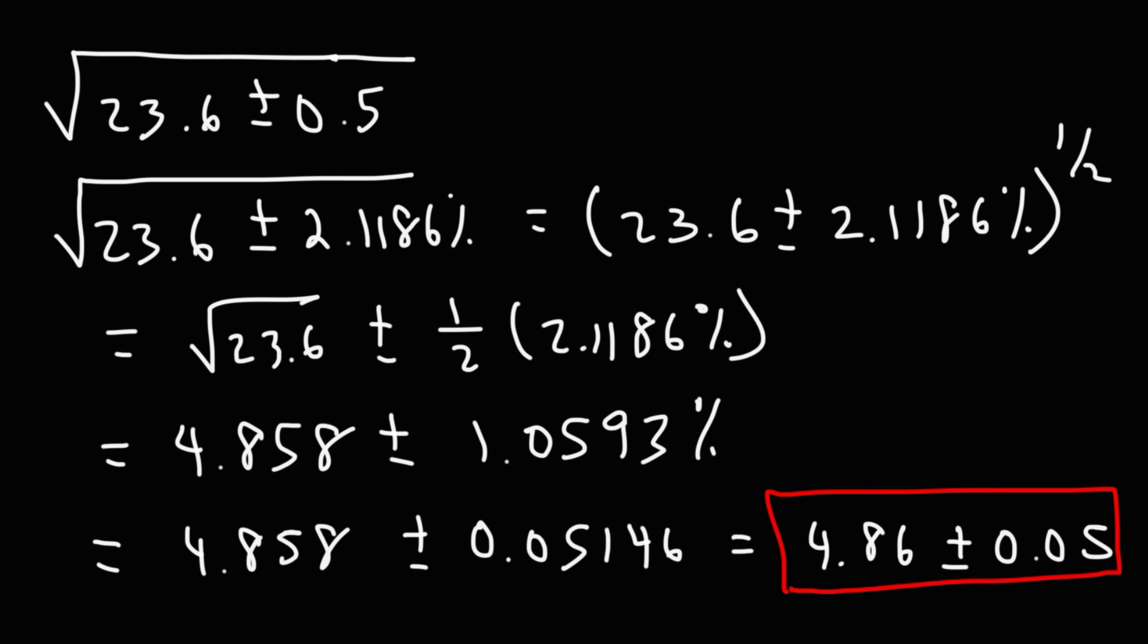Now let's go ahead and make sense of our values. So let's get a range for these numbers. 23.6 minus 0.5 will give us 23.1 on the low side. And on the high side, 23.6 plus 0.5 is 24.1. Now let's take the square root of the lower and the upper values. The square root of 23.1 is 4.806, we can round that to 4.81. And the square root of 24.1 is 4.909, which we can round to 4.91.